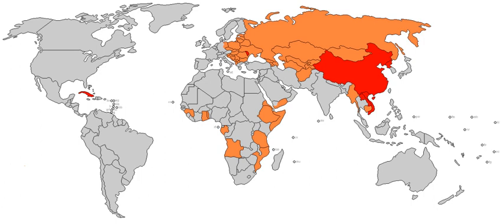Socialist economic systems, all of which feature social ownership of the means of production, can be subdivided by their coordinating mechanism — planning and markets — into planned socialist and market socialist systems. Additionally, socialism can be divided based on property structures between those based on public ownership, worker or consumer cooperatives, and common ownership. Communism is a hypothetical stage of socialist development articulated by Karl Marx, whereby the economic output is distributed based on need and not simply on the basis of labour contribution. The original conception of socialism involved the substitution of money as a unit of calculation with calculation in kind or a valuation based on natural units, with business and financial decisions replaced by engineering and technical criteria. Fundamentally, this meant that socialism would operate under different economic dynamics than those of capitalism and the price system.